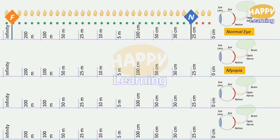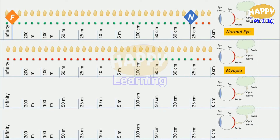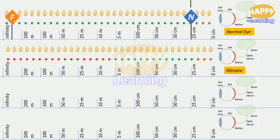Now take the case of an eye with a defect called myopia. The green buttons show its visibility and red buttons show blurred vision. This eye is also unable to see clearly up to 25 centimeters. And particularly, this eye is unable to see objects clearly at longer distances. So its near point is at 25 centimeters, but the far point is at a limited distance and not at infinity.